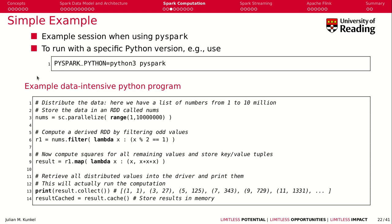Here's an example using PySpark. You can specify the Python version when you run PySpark in your shell — here we run Python 3. This is a simple program for simulation. We parallelize data from 1 to 10 million, so we have 10 million values stored in an RDD called NUMs.